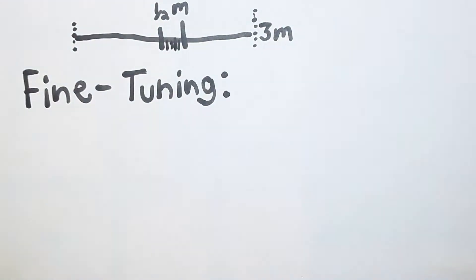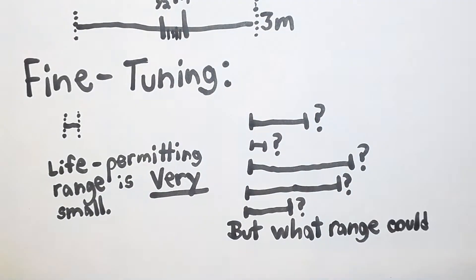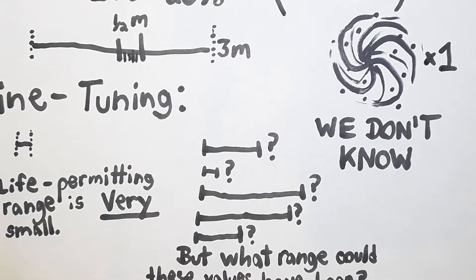So bringing this back to fine-tuning, the life-permitting range is very small, but how large is the range of possible values? What strengths could these constants have possibly been? Well we don't know. We only have one universe so there's no way to get an idea of what these possible ranges are.